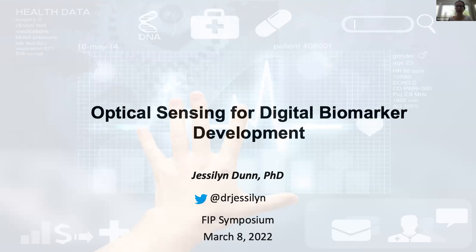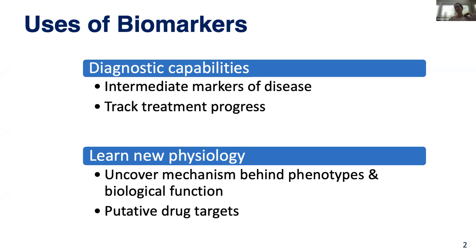I like to usually start out these talks by revisiting the idea of what a biomarker is and what we tend to use them for. Broadly, when we think about biomarkers, we think about two major overarching principles. One is a diagnostic capability where we use a biomarker as an intermediate tracker of disease or to track treatment progress. On the other hand, we can also use a newly discovered biomarker to uncover new mechanisms behind diseases, phenotypes, biological functions, and possibly even to develop putative drug targets.